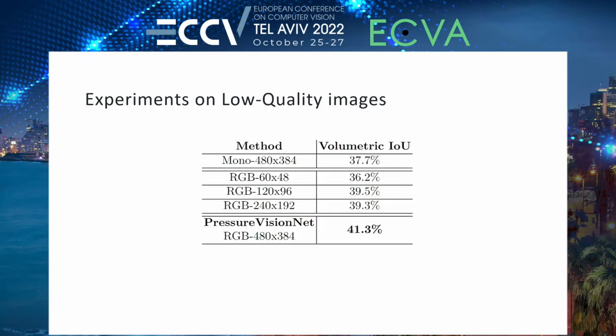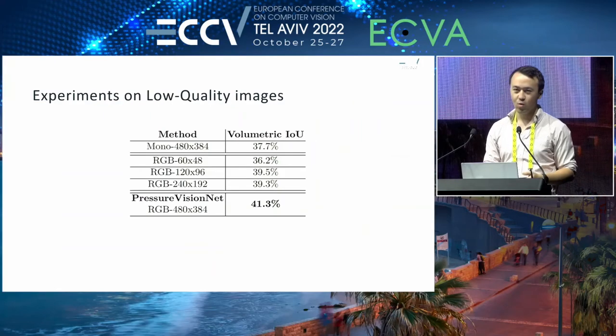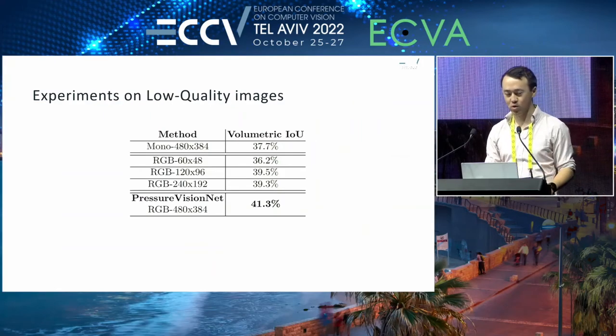Our dataset was captured in a controlled environment. However, we wondered how performance changes with lower quality images. We trained networks on artificially degraded images and found that it loses a moderate amount of performance under monochrome images or lower resolution, which we think is encouraging for future work.